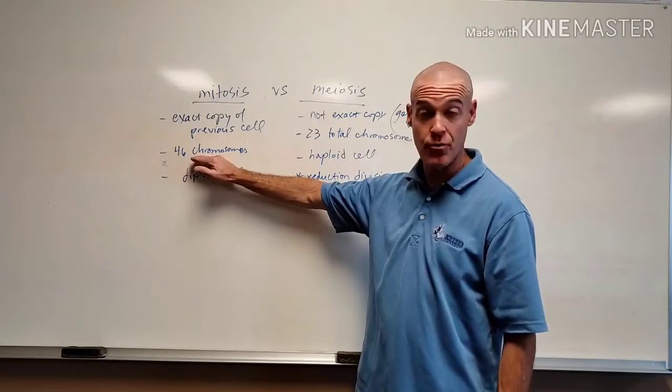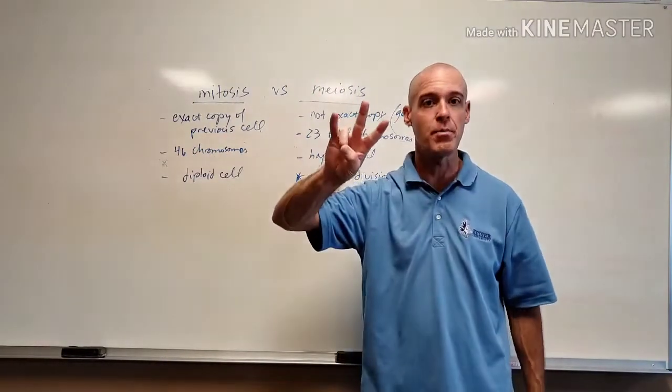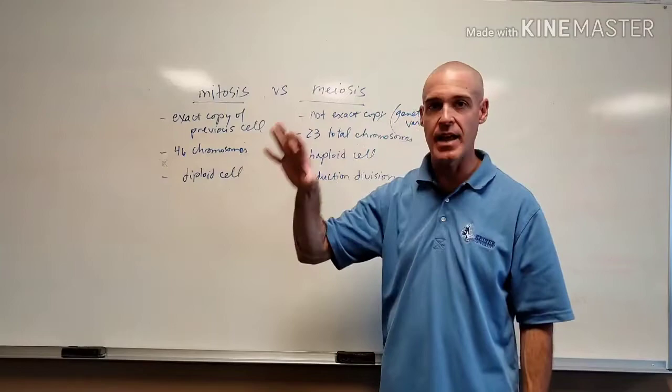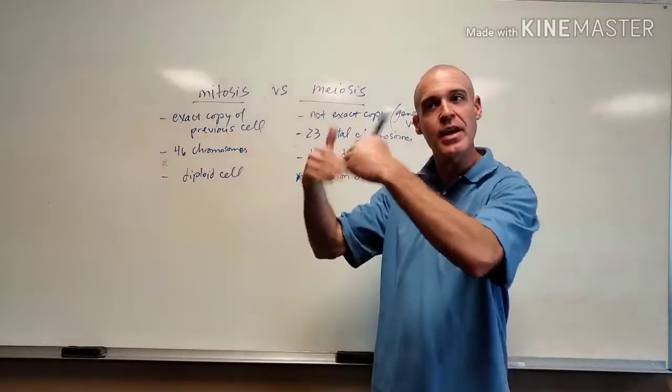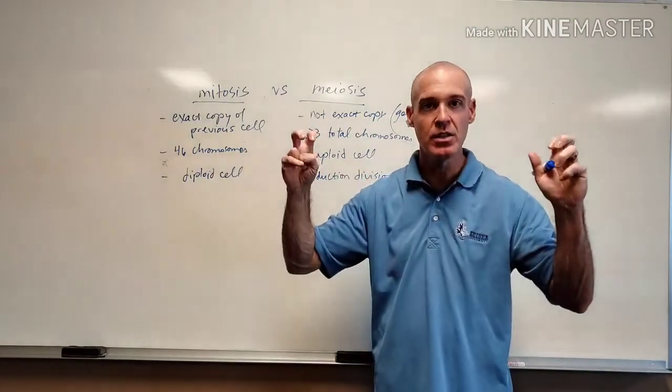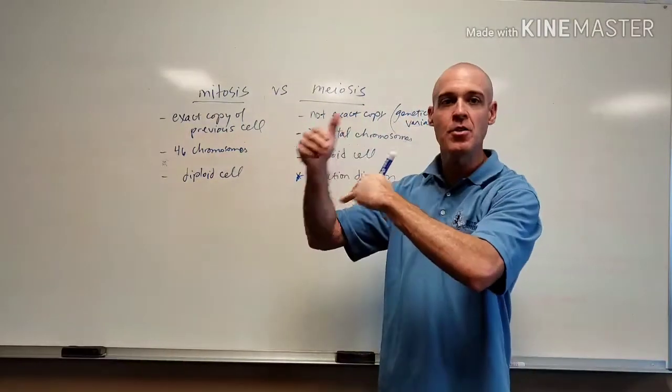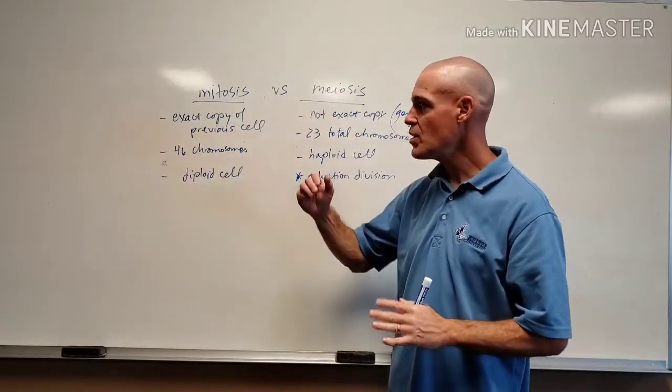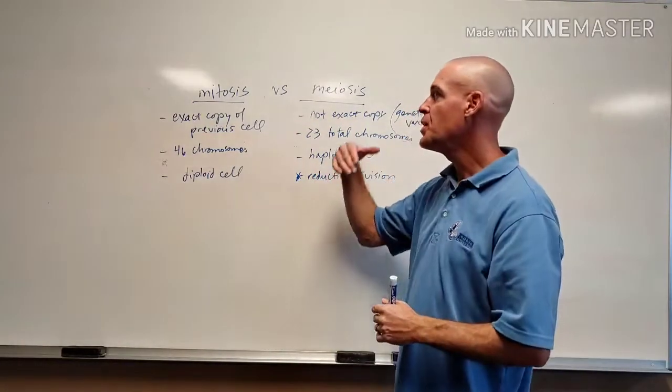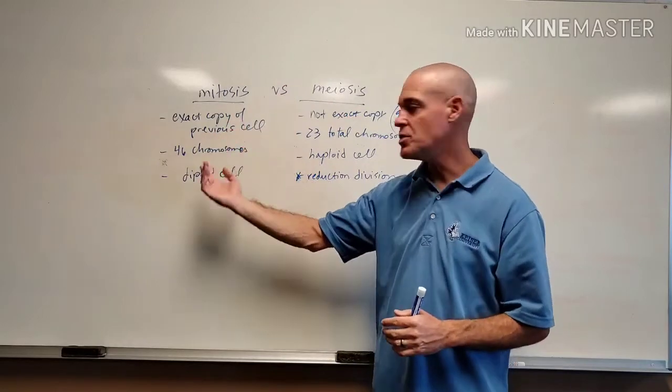And it should have, therefore, 46 chromosomes, or 23 pairs. It should be exact same cell type. That's the point with mitosis. Any cell that can undergo mitosis can do something we call hyperplasia, which means it can increase in cell number. We call all these cells that are created by mitosis diploid cells.